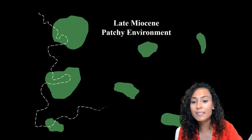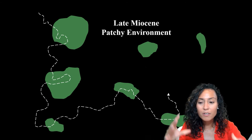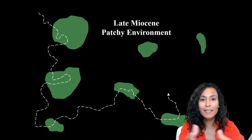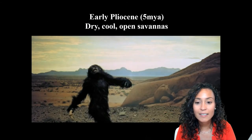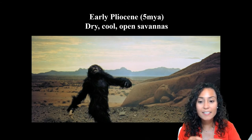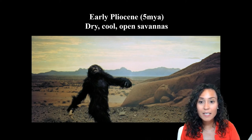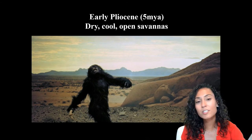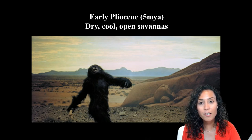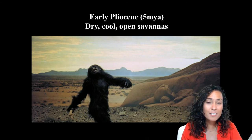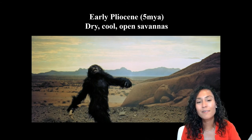Over the course of the Miocene period, there's a general decline in temperature and humidity. As a result, forests begin to shrink and grasslands expand. In the early Pliocene, things become really dry and cool, and these savannahs become less forested and more expansive. So basically, between the Miocene and the Pliocene, we see a dramatic shift in forest coverage of much of the African savannah area where our early hominin ancestors were living, which precipitated a need to change the way our ancestors were moving around.